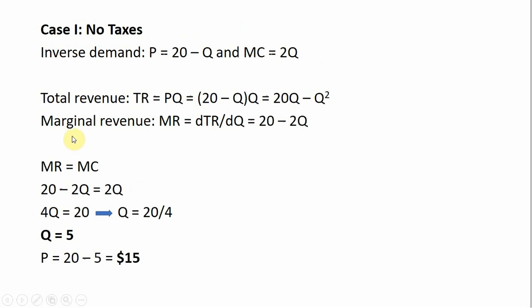The next step is marginal revenue. We take the derivative of total revenue with respect to quantity, so the derivative of 20Q minus Q squared is 20 minus 2Q. One rule of thumb is that marginal revenue will look like the inverse demand, except with a slope that is twice as steep — so instead of 20 minus Q, marginal revenue is 20 minus 2Q.